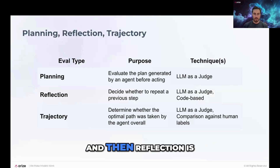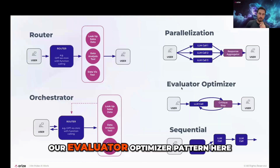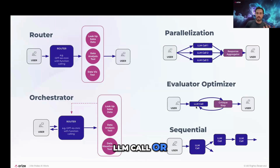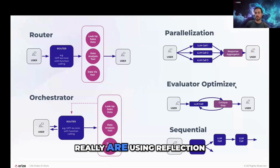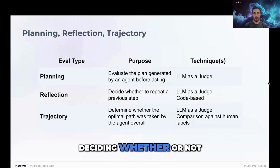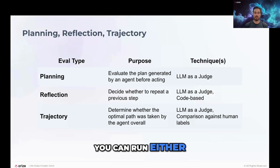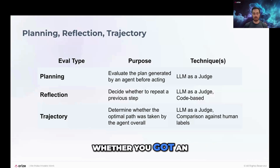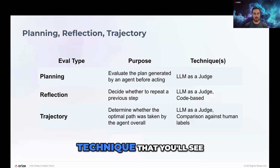Reflection is another eval type, and it's very similar to the evaluator-optimizer pattern where you have an LLM call or a step in your agent that is then evaluated and critiqued. The evaluator-optimizer step really is using reflection to some degree. Generally, what reflection is doing is deciding whether or not to repeat a previous step in your application — it's an evaluation you typically run during agent execution to decide whether you should return to a previous step, whether you got an incorrect output, or whether you can get a better output.